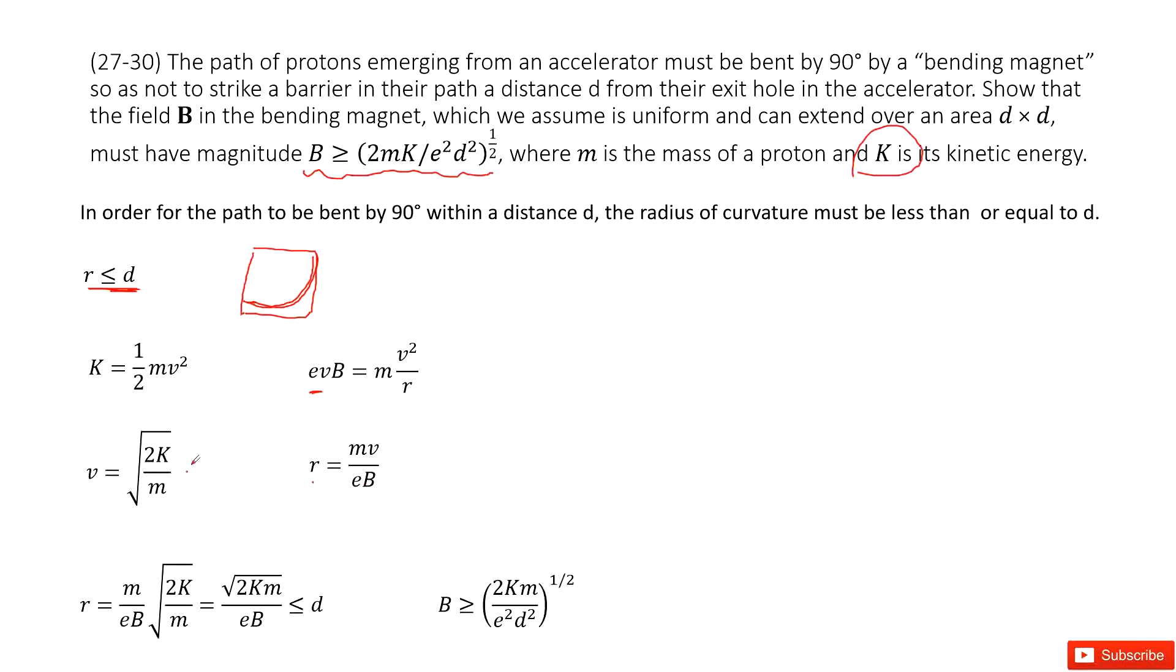And for this kinetic energy equation, you can get the function for v. As we talked about, r should be smaller or equal to d. So r equals mv divided by eB. The v we can substitute as √(2K/m).